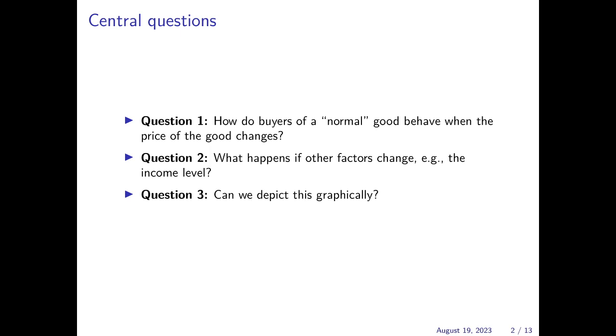Normal in this context means that the demand for the good increases when the income of the consumer increases. For goods for which this is not the case, some odd things can happen when the price changes. These would be the so-called Giffen goods, which are a particular form of inferior goods. But I will go into the details in other chapters on that.